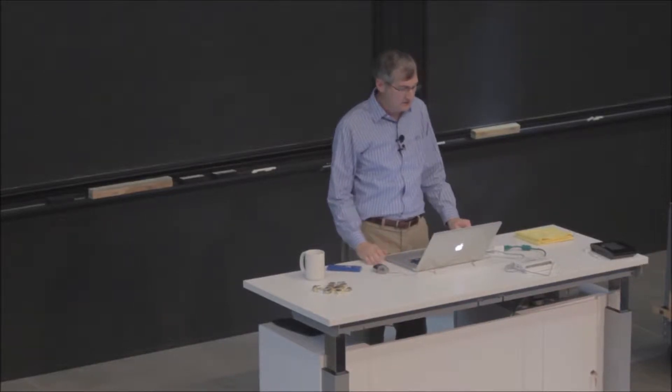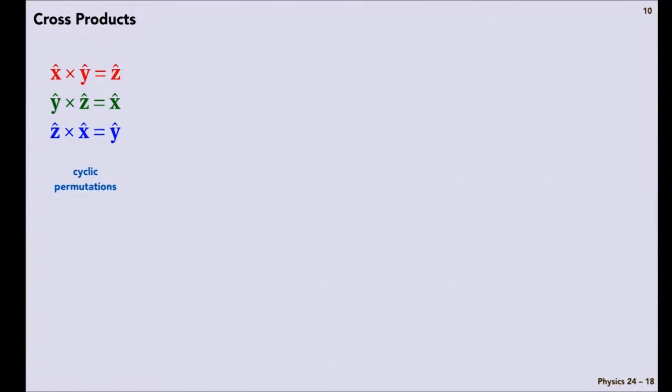So let me remind you a little bit about cross products. The cross product between unit vectors is defined this way. x cross y gives you z.